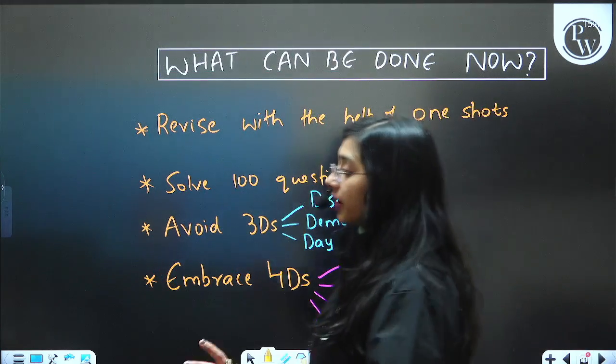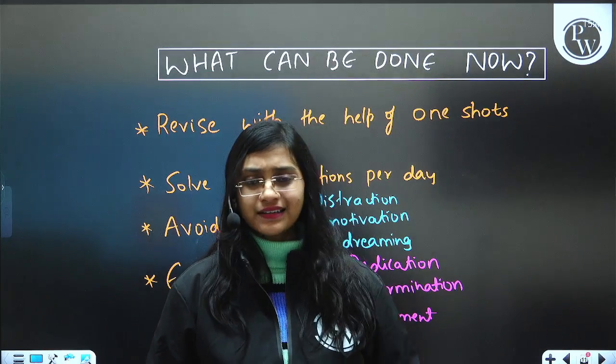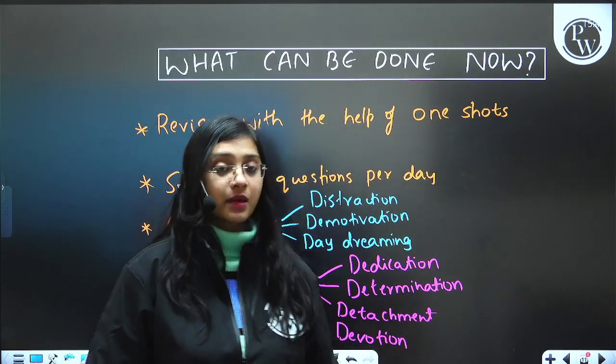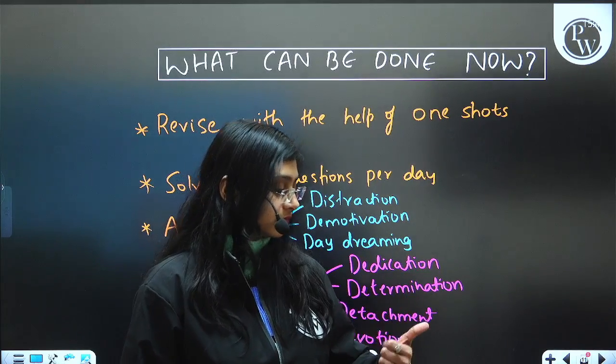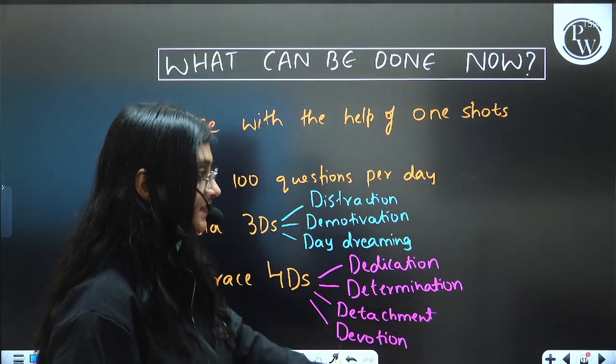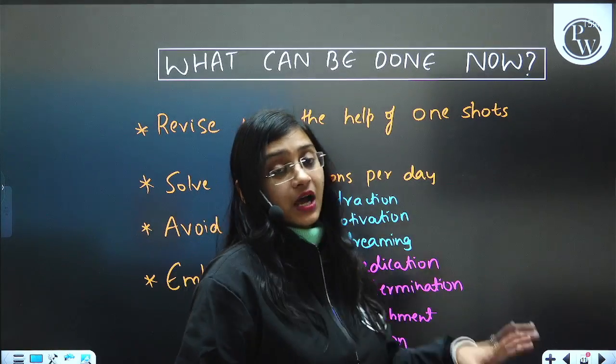And what you can do right now because only few months are remaining. Today that is on 19th Feb 2024, I am recording this. Exam is on May 5th. So, you have Feb, March and April. So, around two and a half months you have got. Let us consider that. What is the things that you have to do now?